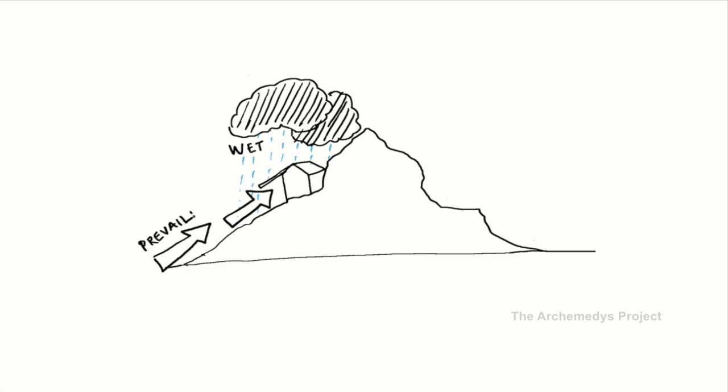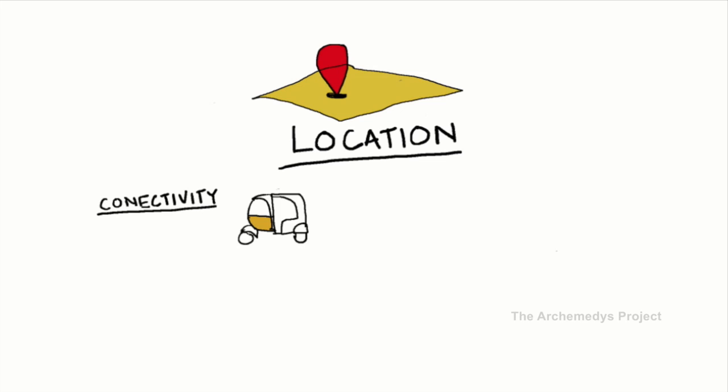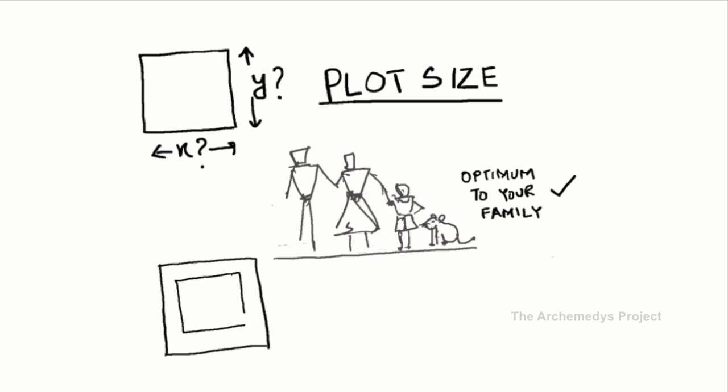So what is the checklist while selecting your site? First, know your location: connectivity to public transport, bus, metro, local trains. What is the proximity of your site to neighborhood retailing, schools, and primary health facilities? Next, understand your plot size, which should be optimum to your family space requirements. After leaving setbacks, will it be sufficient for gardening, vehicle parking, fresh water sump, and drying clothes?